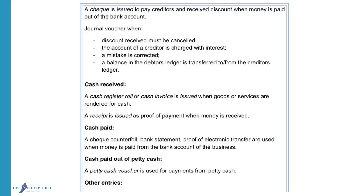A cheque is issued to pay a creditor and discount is received; this will be recorded in the cash payments journal. A journal voucher is used when discount received must be cancelled — for example, if a cheque issued to a creditor was dishonoured, we will have to cancel the discount received on that cheque. Also used when the creditor charges our account with interest because we didn't pay in time, when a mistake is corrected, or when a balance in the debtor's or creditor's ledger is transferred to the other ledger.